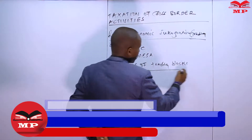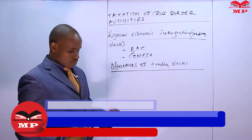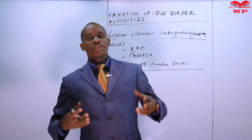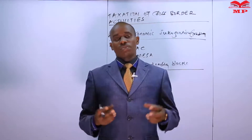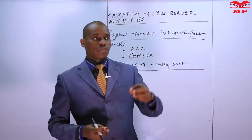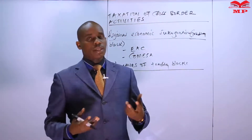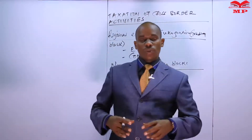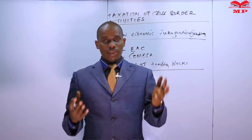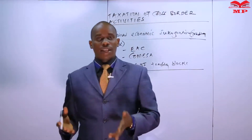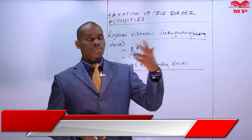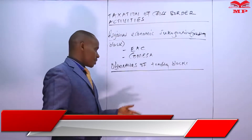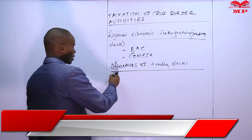Let's look at the objectives of trading blocks — why countries need to come together. A country cannot operate on its own and may not have all the resources it needs. Some things will be missing, so we have to rely on other countries. What we have in excess we can export, and what we don't have we can get from other countries, thereby satisfying our citizens.